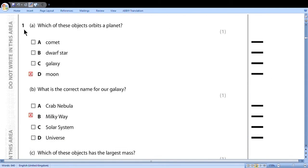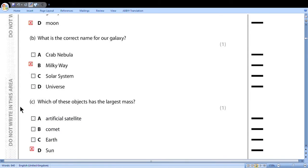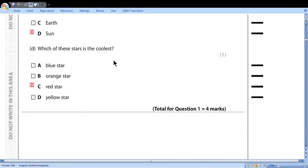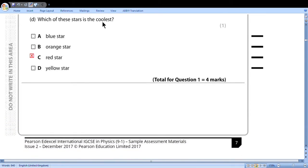Question 1. Which of these objects orbits a planet? You know Moon. So Moon orbits planet Earth. There are also other moons, for example around Jupiter. What is the correct name for our galaxy? Remember it is Milky Way. Which of these objects has the largest mass? Sun, Earth, Comet, Artificial Satellites. For sure it is Sun. Which of these stars is the coolest? So if we look to the visible spectrum from red to violet, we see that red has the greatest wavelength. When objects are heated first they send out red light and then eventually blue or violet. So red is the coolest star.